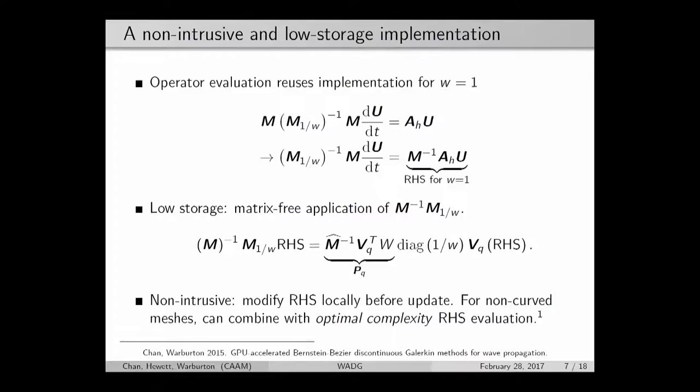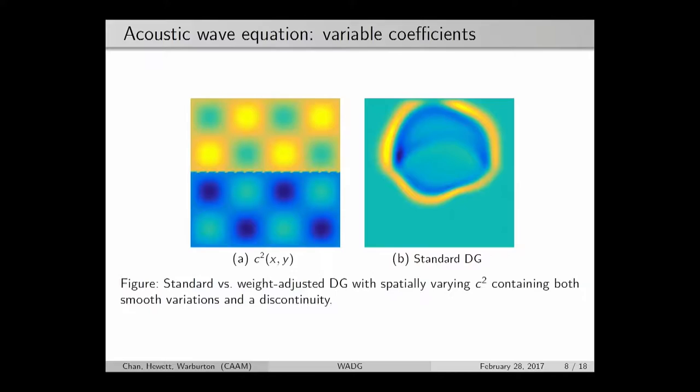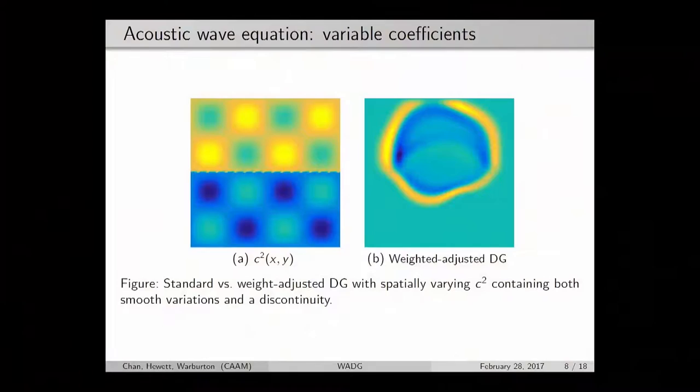This is the method in brief. I'd like to convince you through some numerical examples that this actually works. For acoustic waves, I'm doing a couple simple model problems. Here I have a square domain, a uniform triangular mesh, and if I take my wave field to be this spatially varying wave field with some discontinuity along this line, then the standard DG method where I actually compute and invert every one of these weighted mass matrices gives me a solution like this. If I switch to weight-adjusted DG, there's no visual change in the solution at all.